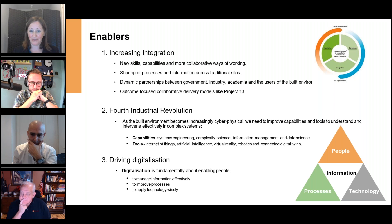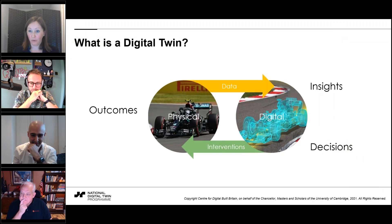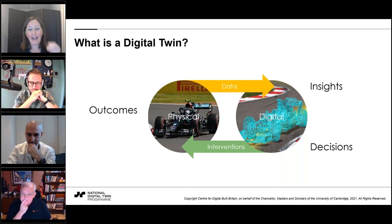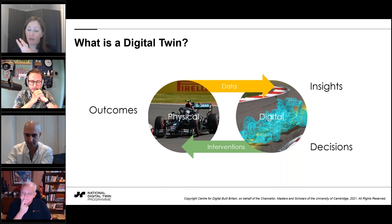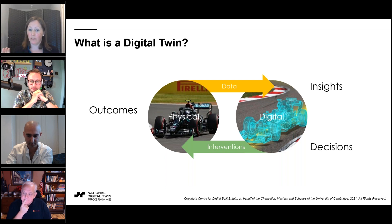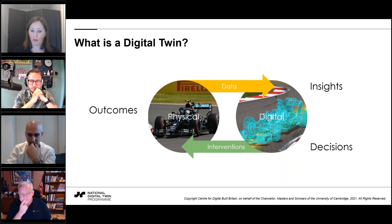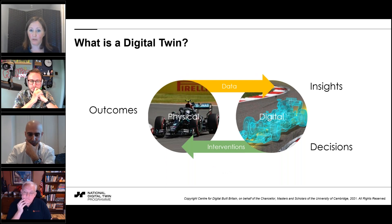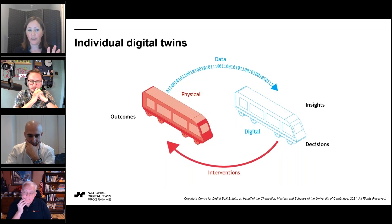Digital twins have been used a lot in Formula One - they were kind of the first. Data comes from the physical asset into a digital model. What makes it a digital twin rather than just a 3D model is the feedback loop going back the other way: the data allows insights, those insights inform decisions, and you therefore intervene better on the physical asset and get better outcomes. It's that loop that makes it a digital twin.